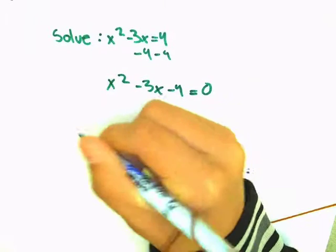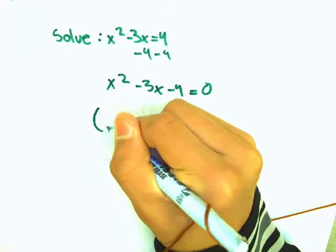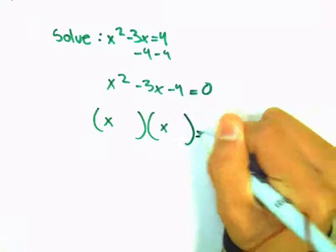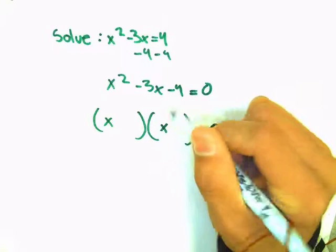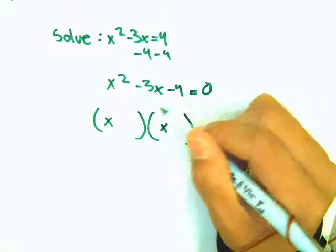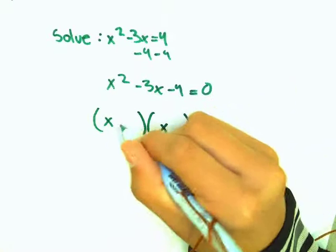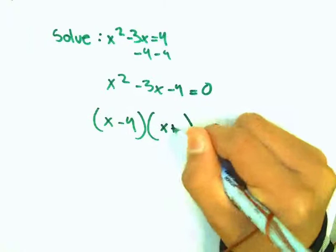Now we're going to factor it, and we're going to get 2 binomials, x and x equals 0. And we want to get 2 factors that when you multiply them you get negative 4, and when you add them you get negative 3. And that would be negative 4 and positive 1.